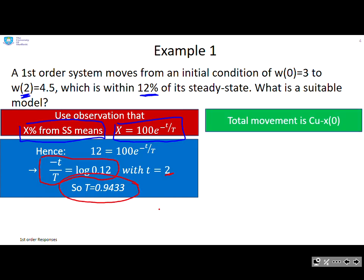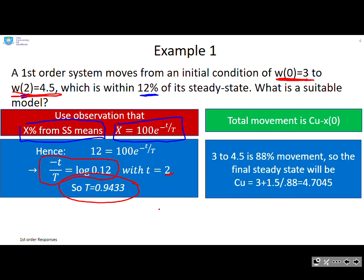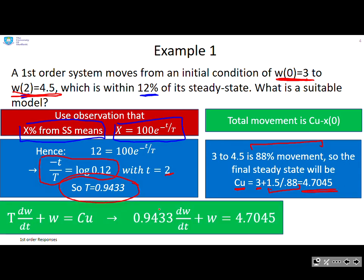Next, the total movement is Cu minus x(0). I can see the movement between time zero and time two. I've gone from 3 to 4.5, so 3 to 4.5 is 88 percent movement. The total movement comes from turning that 1.5 to 100 percent. So the steady state Cu is going to be 3 plus 1.5 divided by 0.88, which gives Cu equals 4.7045. Therefore there's my final model in time constant form, with the time constant plugged in there and the Cu term there.